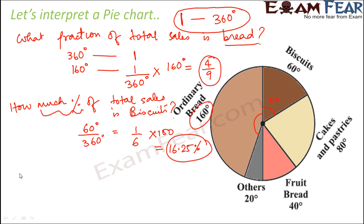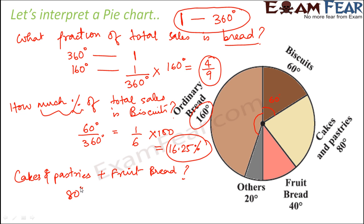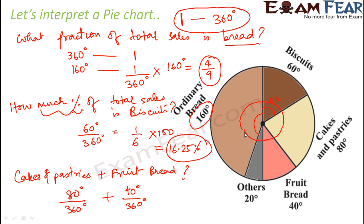Again, what about the total sales of cakes and pastries plus fruit bread together — how much fraction of the sales do they constitute? For cakes and pastries, it would be 80 degrees divided by 360 degrees. For fruit bread, it would be 40 degrees divided by 360 degrees. So 80 over 360 gives 2 by 9, and 40 over 360 gives 1 by 9. Adding them: 2 by 9 plus 1 by 9 equals 3 by 9, which is 1 by 3.